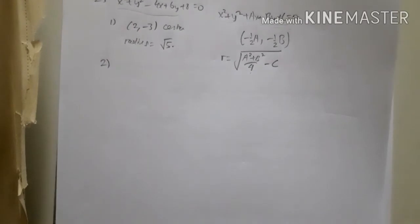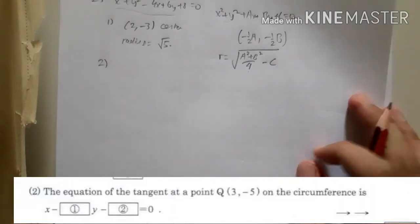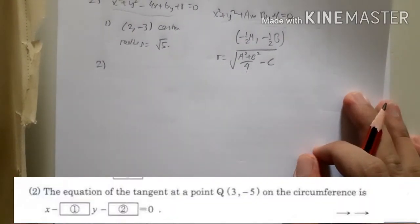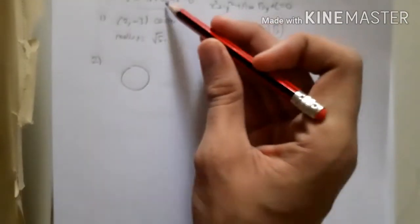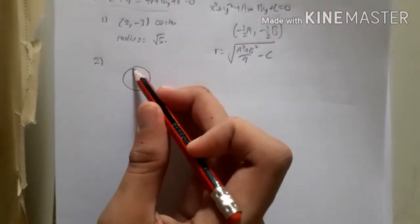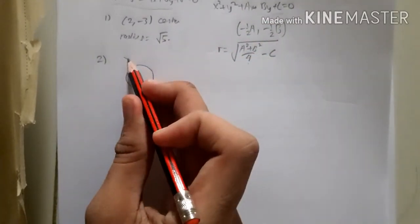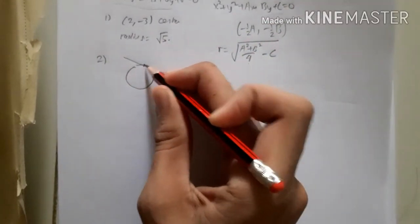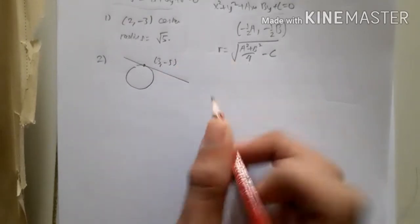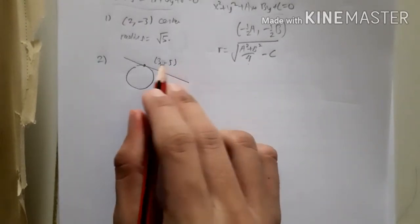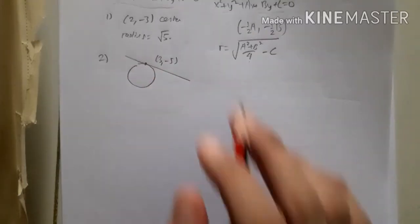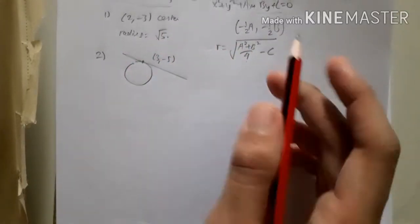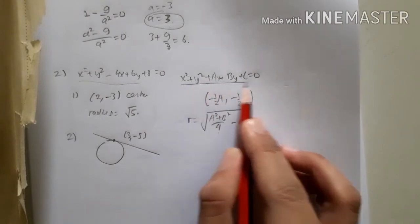Now number two: find the equation of the tangent at the point (3, -5) on the circumference. Basically, there is a circle with the given equation, and there is a tangent at the point (3, -5). The question asks us to find the equation of this tangent line.